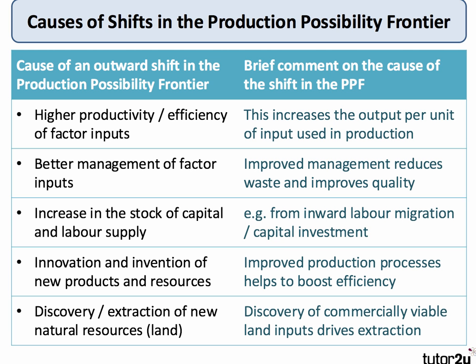What causes the PPF to shift outwards? Let's focus on five key causes. First, if factors of production become more efficient — for example, if output per worker employed or per worker hour increases, this raises production for each unit of input. Second, better management of factor inputs: improving management quality in businesses, reducing wasted resources, and improving both quality and quantity of production.